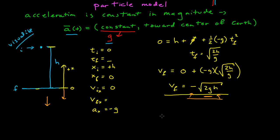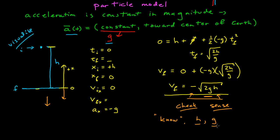I want to pay attention to a couple of things. One is that checking to make sure the answer makes sense is the final step in solving any problem. The other thing is what we mean by what we know and what we don't know. I stated in the problem that we know the height h and the acceleration g, but I never gave absolute numbers for those expressions — no specific number for h or g. Many students get confused at that point.